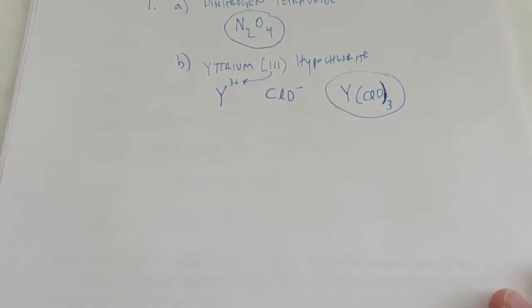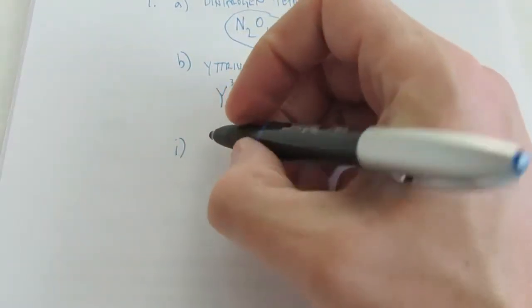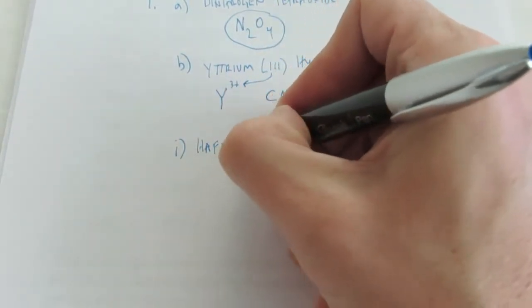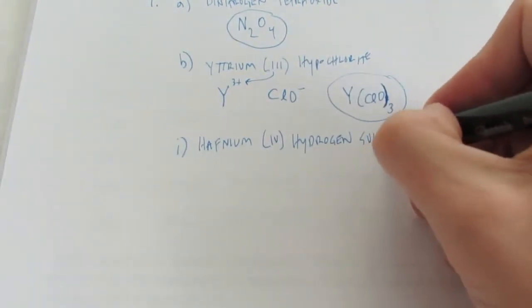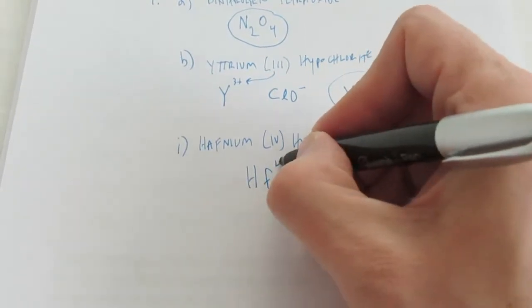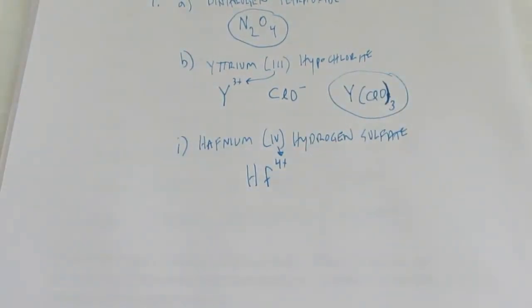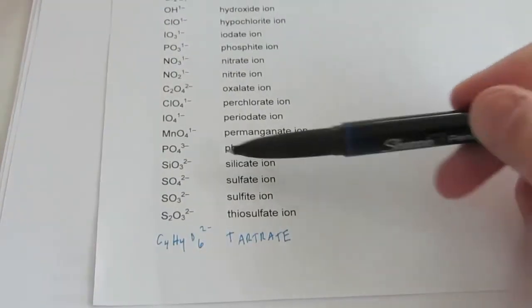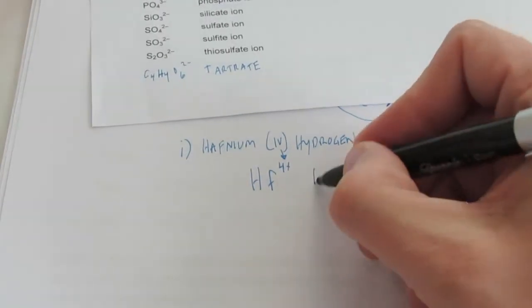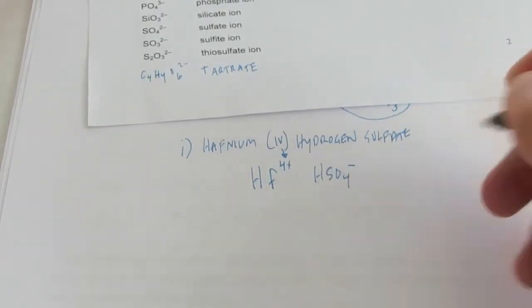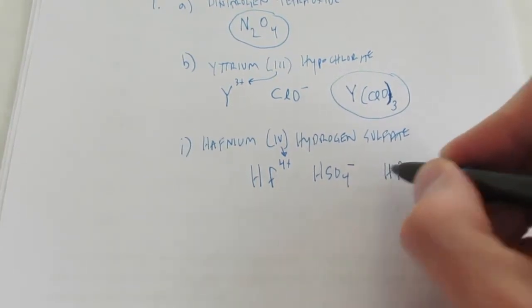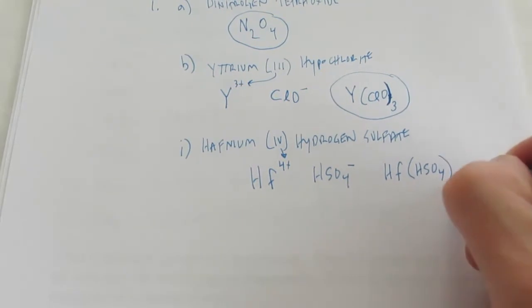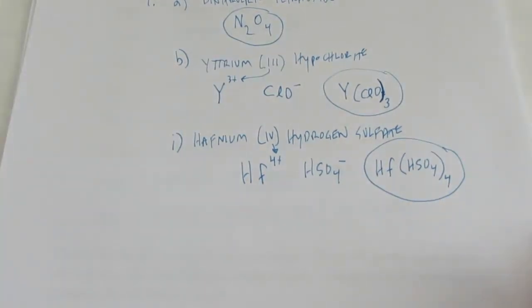Let's skip over and do letter I for you. Okay. Letter I is hafnium(IV) hydrogen sulfate. Okay. Now, hafnium is Hf and it's 4 positive. Right? I got that from the Roman numeral. Hydrogen sulfate. Well, you know what? I neglected to put that on your polyatomic chart, you'll notice. But I do have sulfate here. And sulfate is SO4 2 negative. Hydrogen sulfate is HSO4 1 negative. That's hydrogen sulfate. So, that's 1 negative. Hafnium is 4 positive. I think I'm going to need 4 of these hydrogen sulfates. So, I put HSO4 in parentheses with a 4 on the outside.